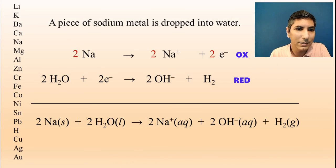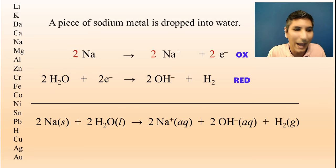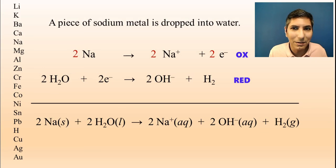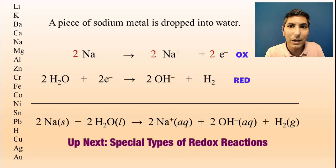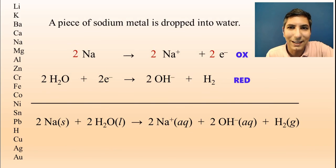The overall balanced equation is: 2Na + 2H2O → 2Na+ + 2OH- + H2. That's the balanced redox reaction for sodium in water. I hope you learned something about the activity series and how to write redox reactions. Please give me a thumbs up, and I'll see you in the next video where we'll learn about writing redox reactions for non-metals and a few other cases as well. Thanks for watching!